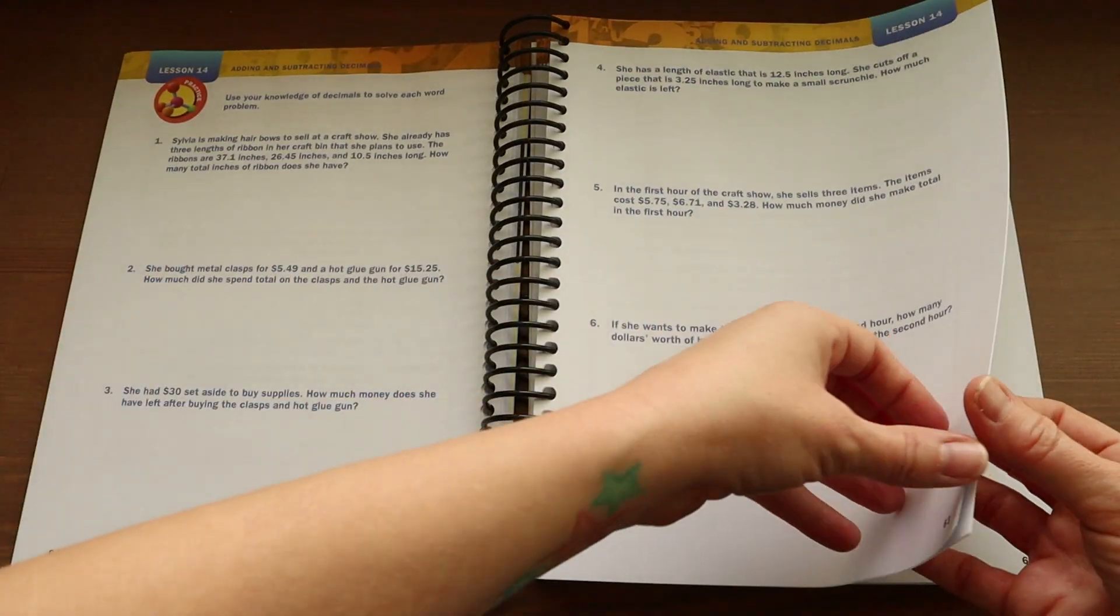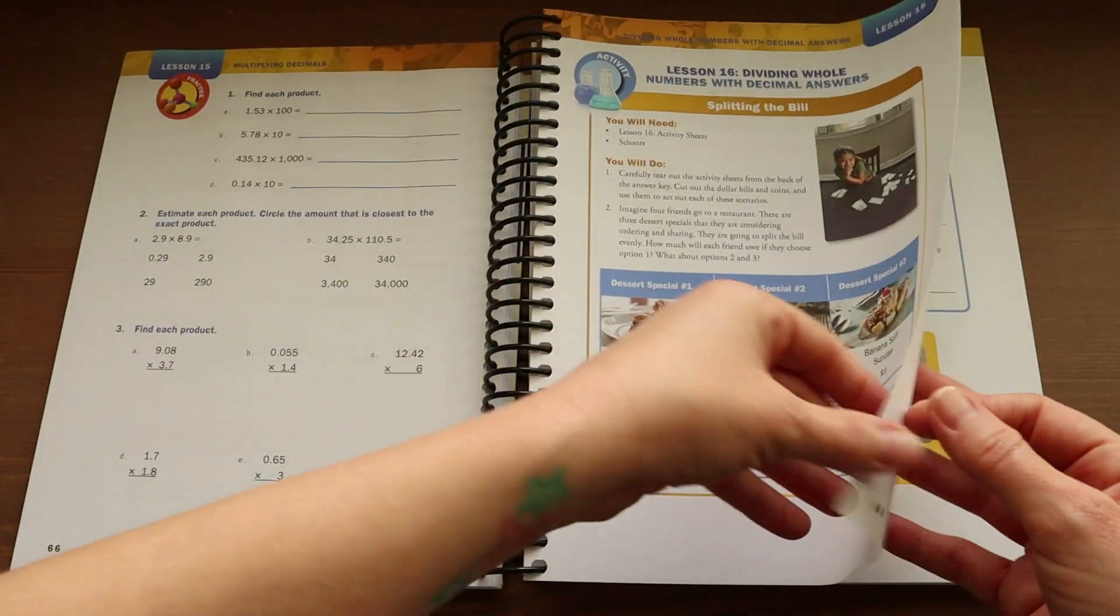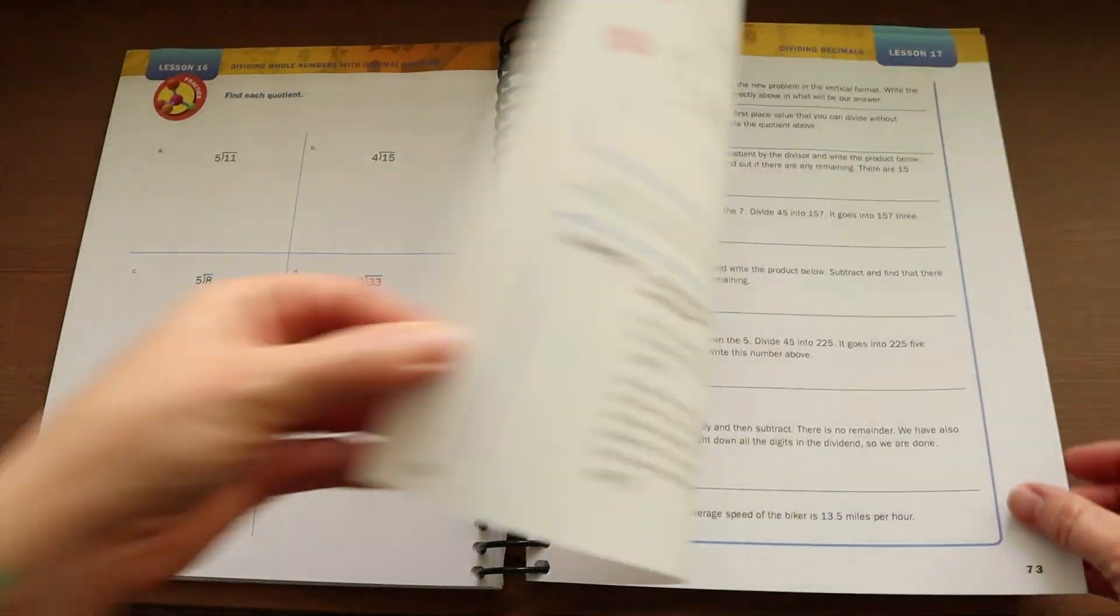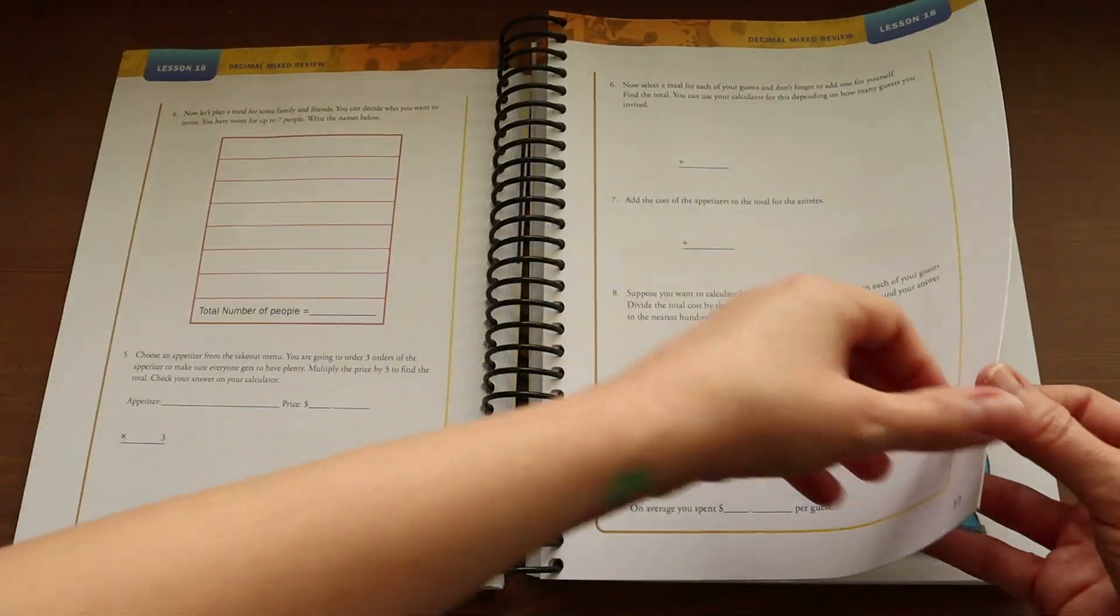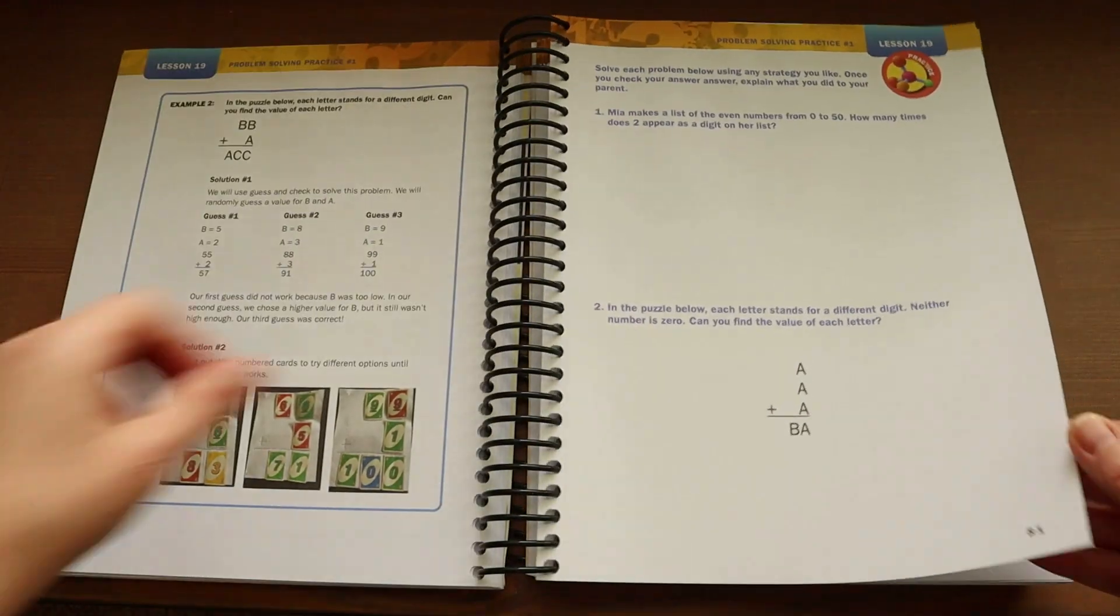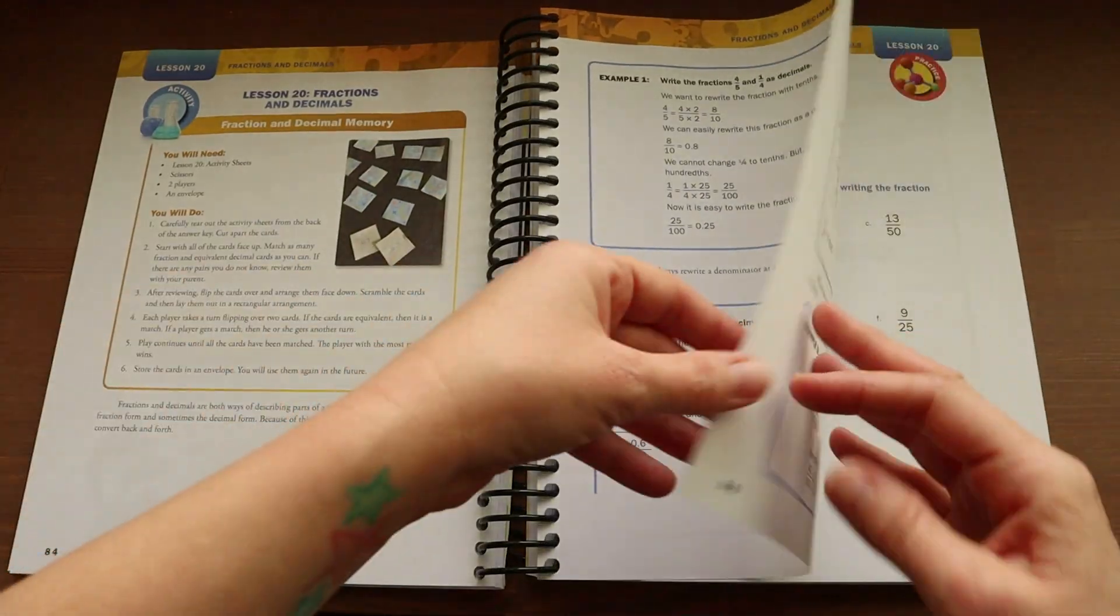Now this curriculum consists of 15 chapters with a review at the end of each one. There are a total of six unit projects and 117 lessons. Each lesson is going to be about three to four pages long and your child will build a mastery of math concepts through a spiral approach.